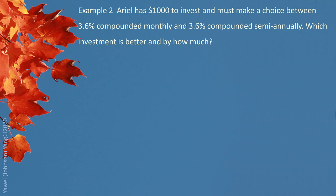Example 2: Arial has $1,000 to invest and must make a choice between 3.6% compounded monthly and 3.6% compounded semiannually. Which investment is better and by how much? Obviously, 3.6% compounded monthly is better, since with the same nominal rate, if compounding more frequently, the money grows faster. Now we just try to find out by how much better.